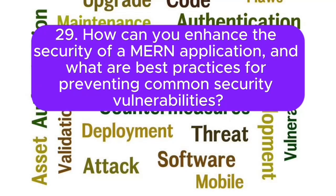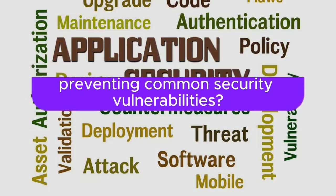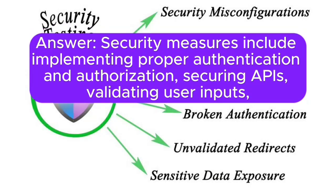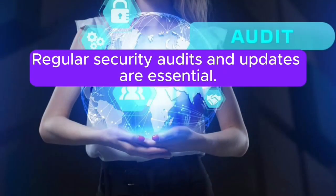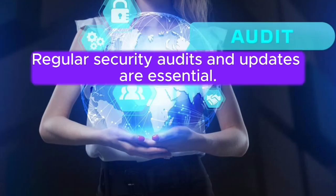29. How can you enhance the security of a MERN application, and what are best practices for preventing common security vulnerabilities? Answer: Security measures include implementing proper authentication and authorization, securing APIs, validating user inputs, preventing SQL injection and cross-site scripting (XSS), and using HTTPS. Regular security audits and updates are essential.